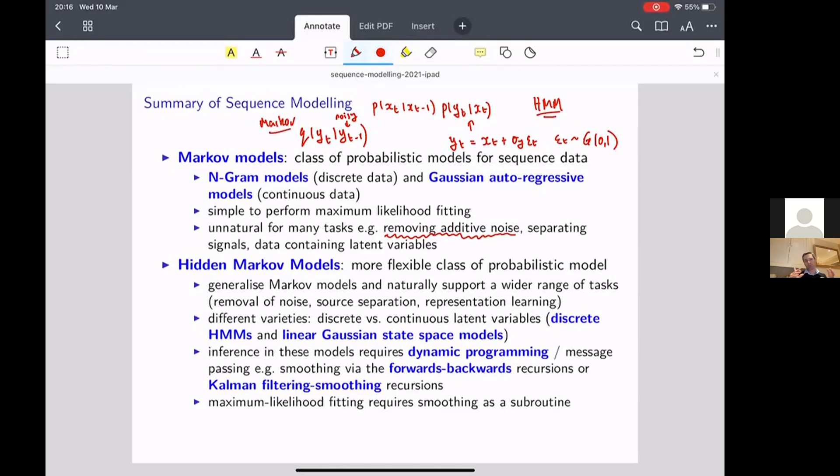So the second part of the course was actually talking about these hidden Markov models now, which are structured exactly like this. They provide a Markov model over the hidden state and then an observation model or emission distribution attached to that.